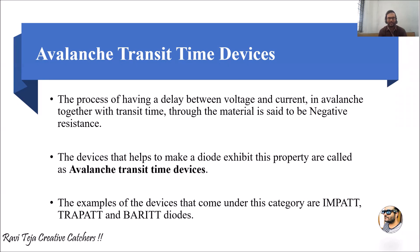All the devices or diodes which exhibit this property can also be called avalanche transit time devices. The devices that help make a diode exhibit this kind of property are called avalanche transit time devices. We have several examples: IMPATT, TRAPATT, and BARITT diodes. These are examples of devices in this category, and we can see the delay between voltage and current with respect to the transit time.